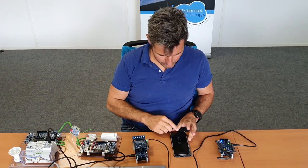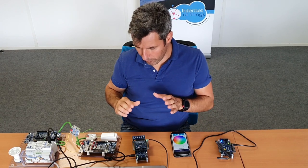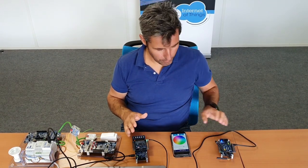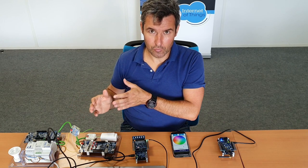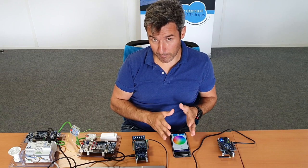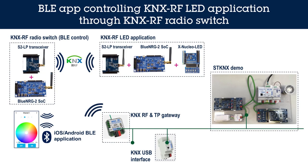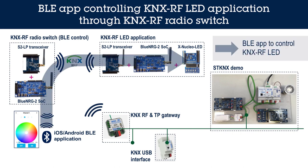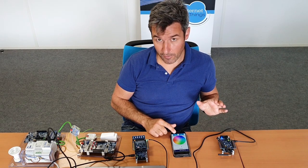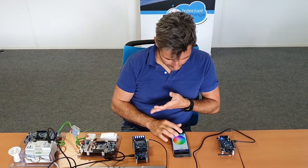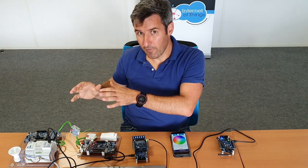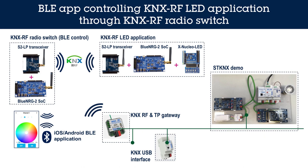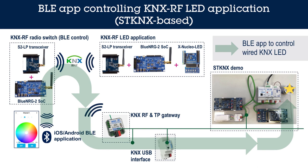Using the BLE application, I am able to control both the KNX RF light application from this push-button app, and also the KNX bus light application. Here is the demonstration with the application on my smartphone, using BLE connectivity between the smartphone and the push-button application. I select the KNX RF light and switch it on or off using this application. I am also able to control the KNX bus-based device through the gateway, which bridges KNX RF connectivity and KNX bus connectivity.